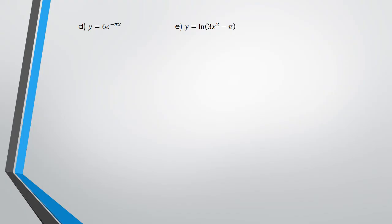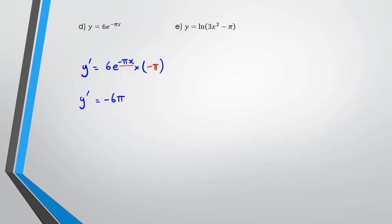For question (d), we're doing exponential differentiation. We've got y dash equals 6e to the negative pi x. With exponential differentiation, you write everything as it is and then multiply by the differentiation of whatever the power is. The differentiation of negative pi x is negative pi, so your answer is negative 6 pi e to the power of negative pi x.